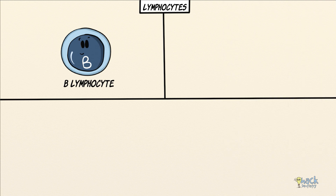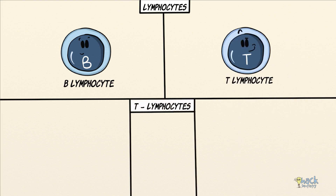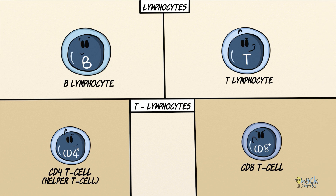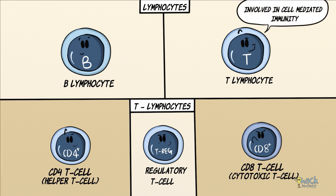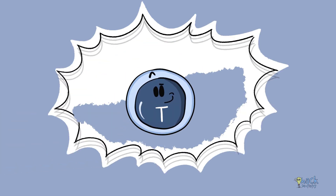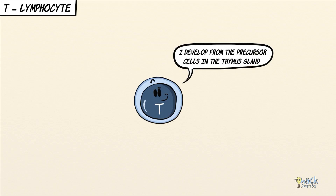Lymphocytes are principally of two types: B lymphocytes or B cells, and T lymphocytes or T cells. T lymphocytes are further of three types: CD4 T cells or helper T cells, CD8 T cells or cytotoxic T cells, and regulatory T cells. While T cells are involved in cell-mediated immunity, B cells are involved in humoral immunity.